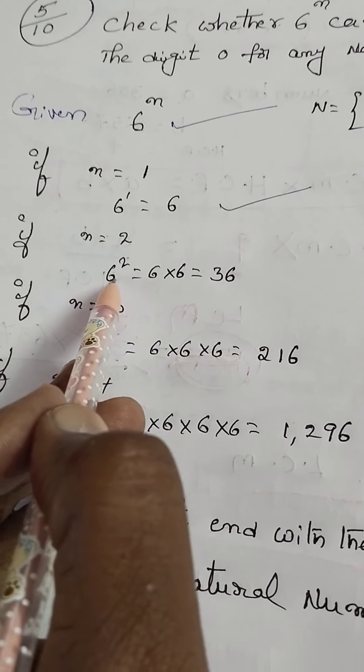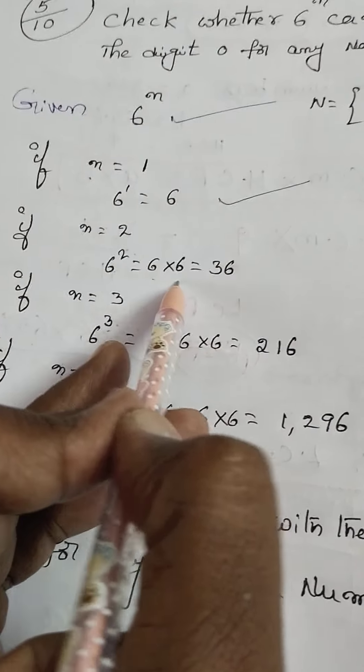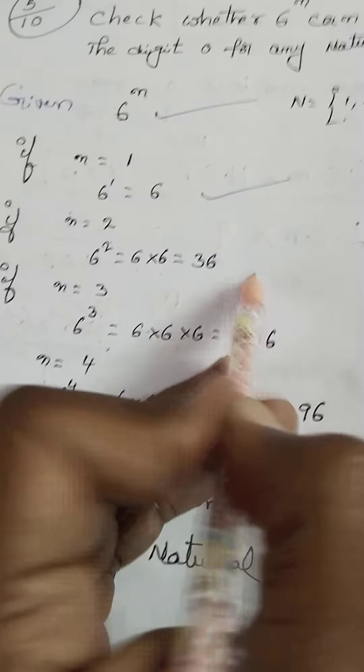if n equals 2, 6 square - 6 into 6 equals 36. No ending 0.